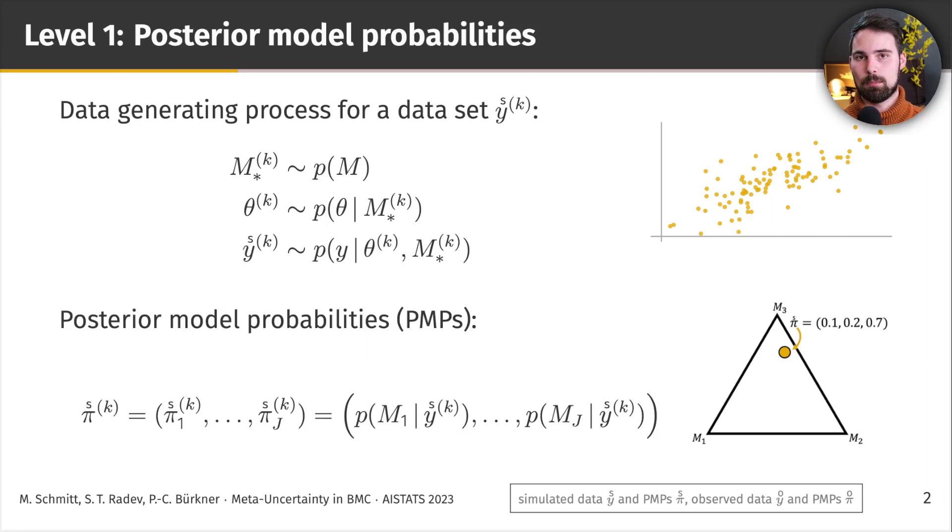The next step, if we have different competing models in this model comparison setting, we can compute posterior model probabilities, which is just a way to say, given this observed data set y, how likely is each of my candidate models? It's an alternative or an extension of Bayes factors, if you're familiar with this, and it's also a prior-based model comparison method.